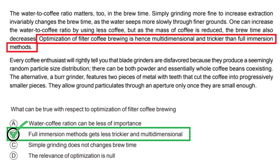Option B is correct as it states that full immersion methods become less tricky and multidimensional in comparison. Let's analyze the other options and explain why they are incorrect. Option A: Water-coffee ratio can be less of importance. This option is not supported by the paragraph. The paragraph does not specifically mention the importance or lack thereof regarding the water-to-coffee ratio.